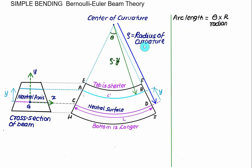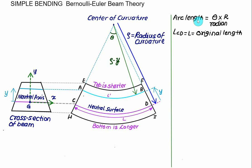The angle theta is common to all fibers, and R represents the general radius. Theta must be in radians. Fiber CD has no change in length, so length of CD equals original length L. Using arc length: L equals rho times theta. Similarly, the new fiber length AB at distance Y, called L prime, equals rho minus Y, multiplied by theta.